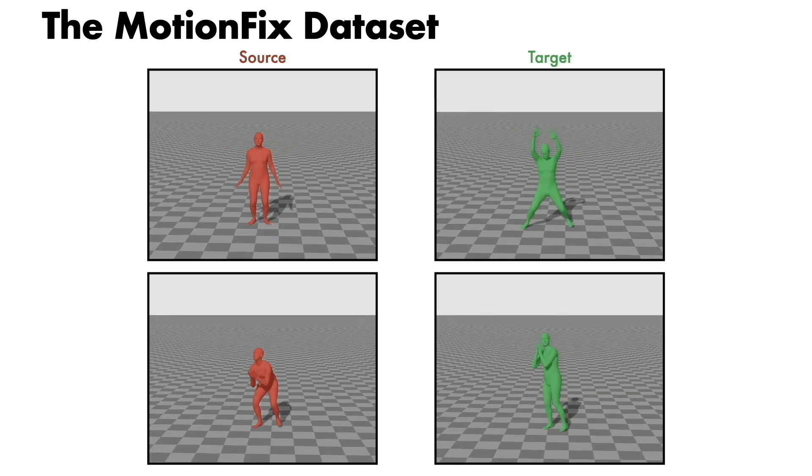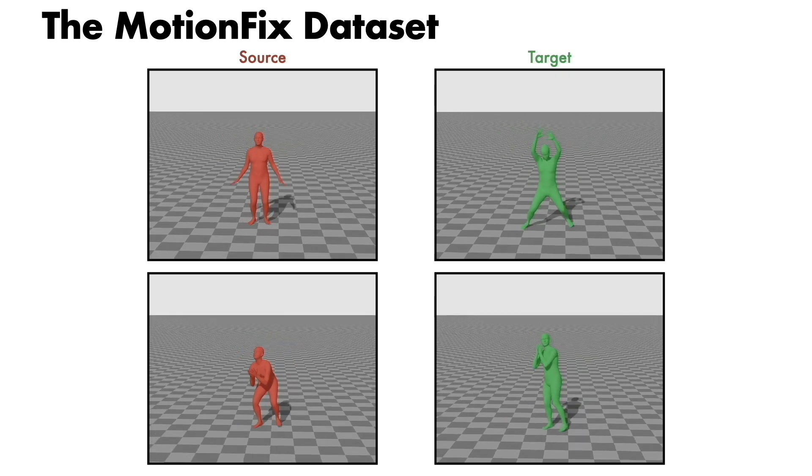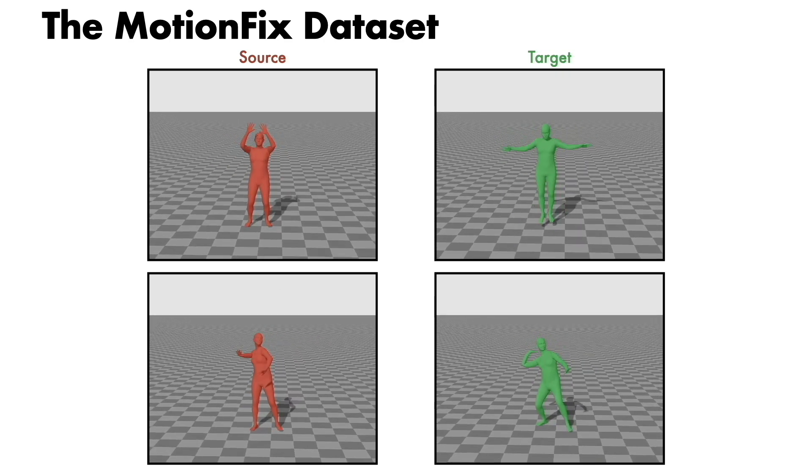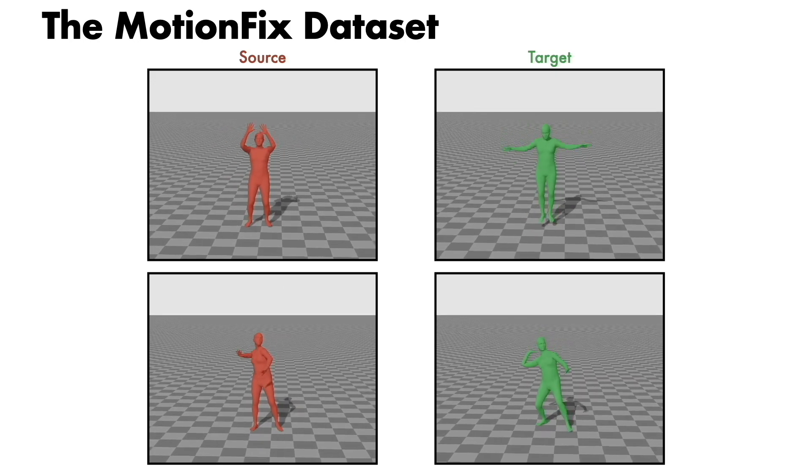We use these pairs to create MotionFix, the first text-based 3D human motion editing dataset containing over 6,700 triplets of motion pairs and edit text.